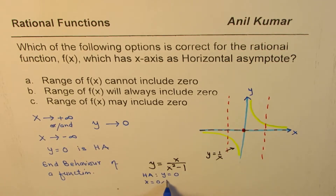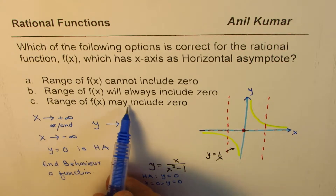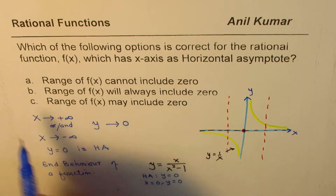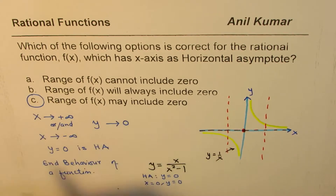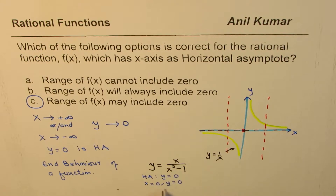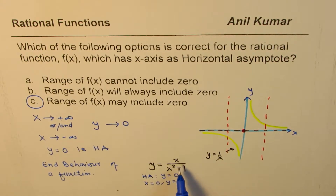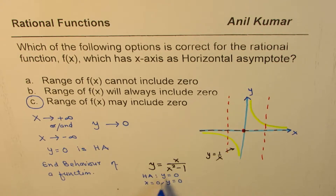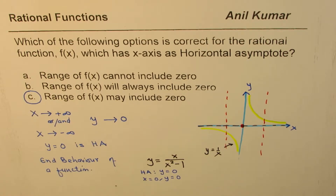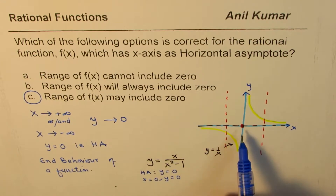In this particular function, the horizontal asymptote is y equals zero, however when x equals zero, y equals zero — so the range of the function may include zero. This option seems to be correct. It's clear from the function itself: since the denominator is of higher degree, the horizontal asymptote is y equals zero, and substituting x equals zero gives y equals zero, so the range includes zero.